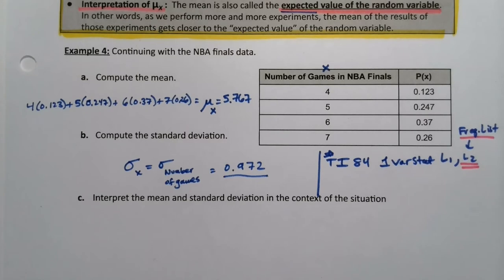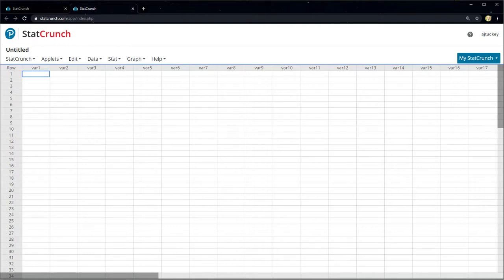Now if you're not going to use the calculator, if you're going to use StatCrunch, that's fine too. But we have to learn a different thing than we've used before in StatCrunch. So here in StatCrunch, I'm going to type in the number of games. All right, so 4, 5, 6, 7. And then over here we're going to have our probabilities, so this will be 0.123, 0.247, 0.37, and 0.26.